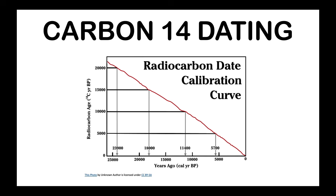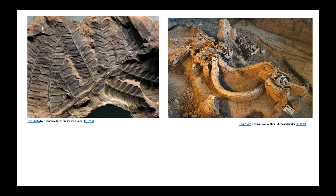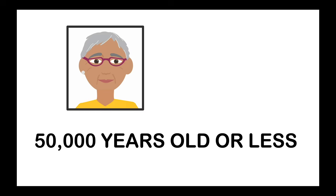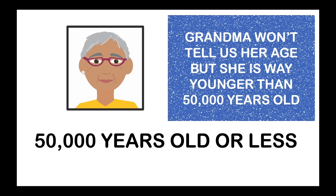Another type of radiometric dating you might have heard of is carbon-14 dating. Carbon-14 dating uses the radioactive decay of carbon-14 isotopes, but it can only be used with materials that were once alive and that lived fairly recently — within the last 50,000 years. I know you think grandma is old, but 50,000 years is way older than grandma, even though she's not going to tell you her age.